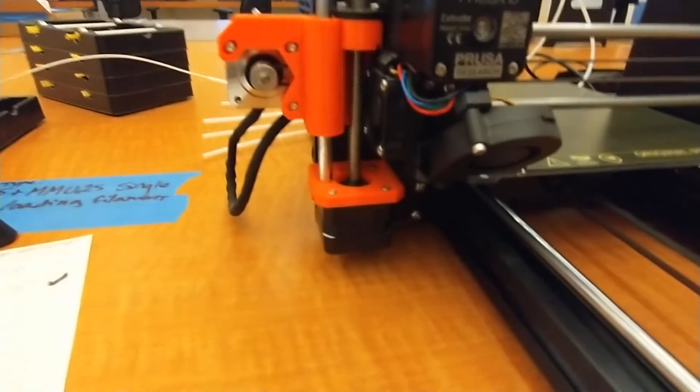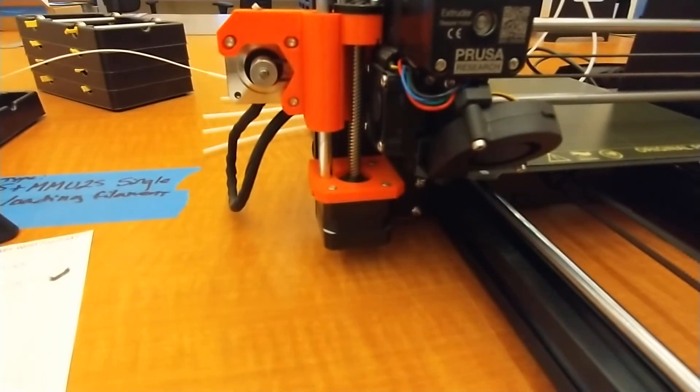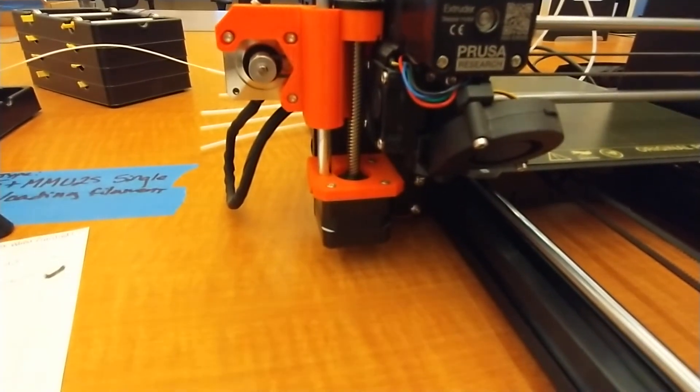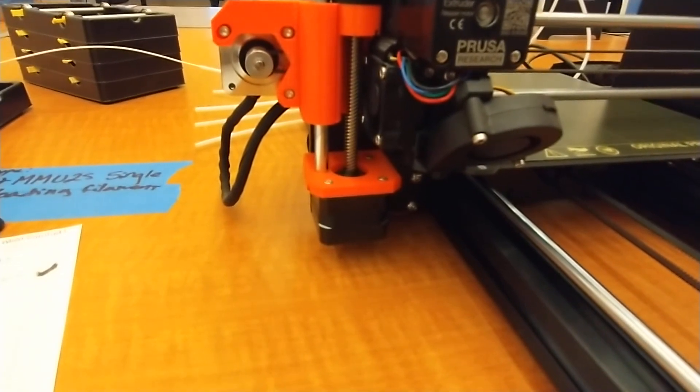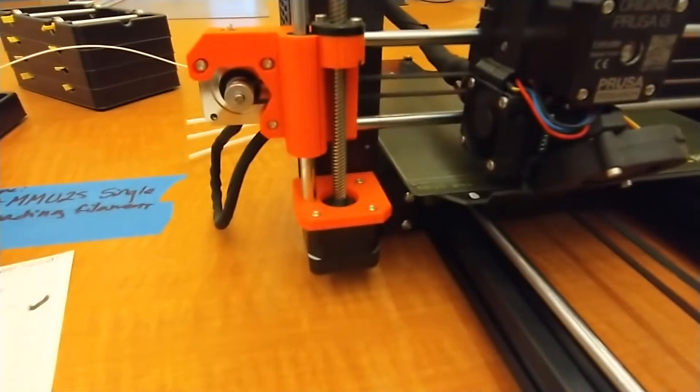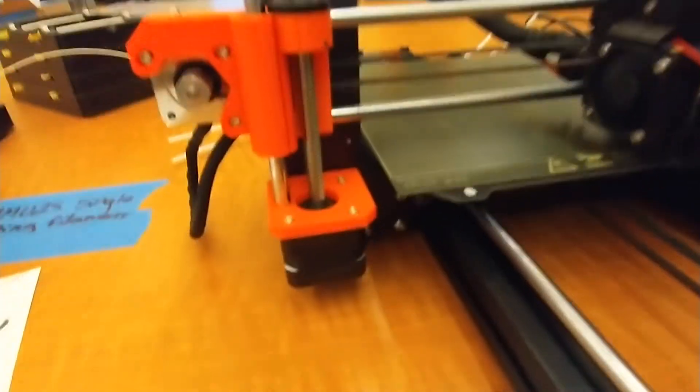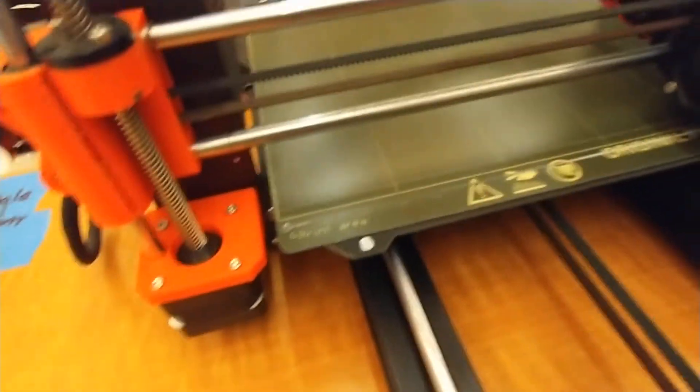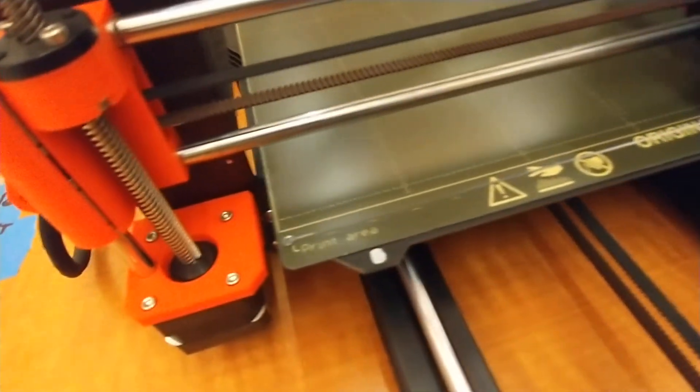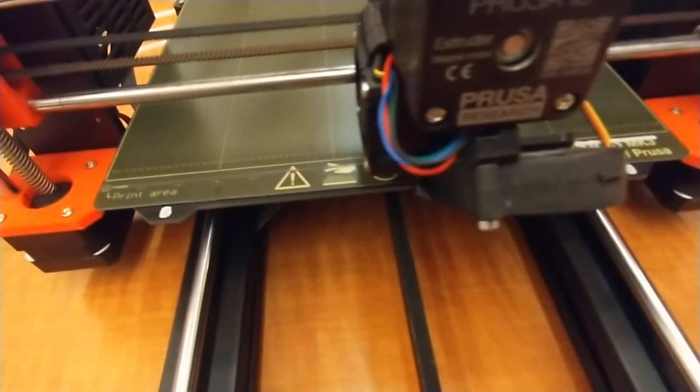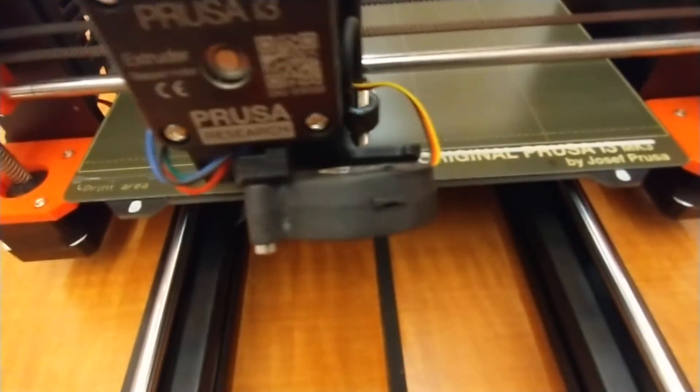One of the big differences of the MMU is the purge line at the start of your print. It extends almost all the way across the bed. That's typically to purge the nozzle while changing materials, first off on a new print.